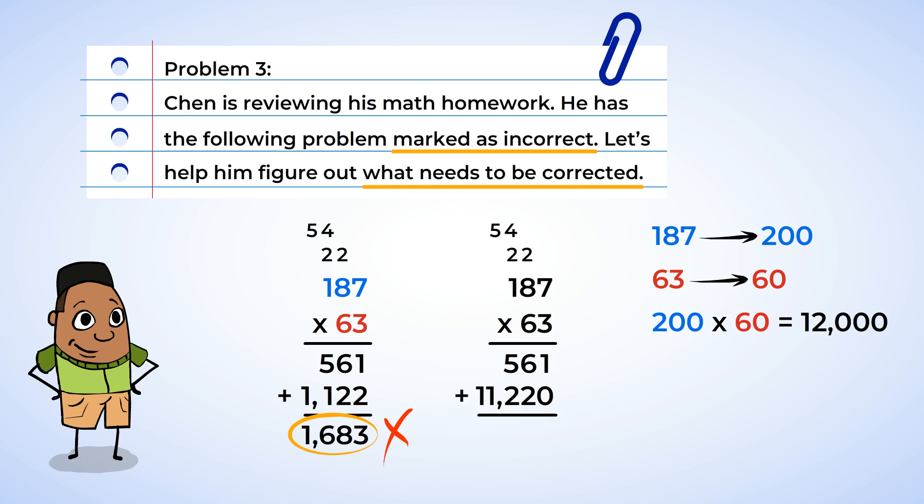One plus zero, that's one. Six plus two is eight, five plus two is seven, and zero plus one is one, and zero plus one is one. So, our final answer is 11,781, and that is close to our estimation of 12,000, so it makes better sense.